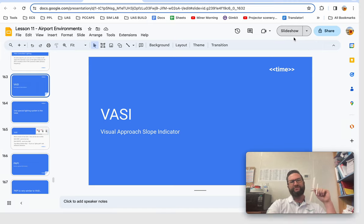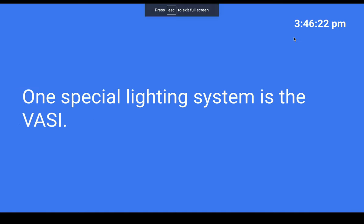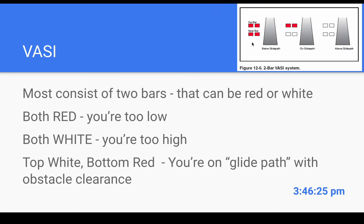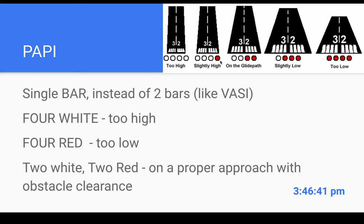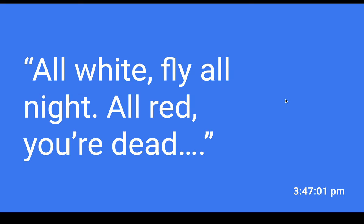One special lighting system is the VASI — Visual Approach Slope Indicator — which consists of two bars. White over red means you're on glide slope. All red means you're too low; all white means you're too high — 'fly all night.' Now you may also have a PAPI, which is similar to a VASI but uses four lights in a row. Four whites means you're too high; three whites and one red is slightly high; two red and two white means you're on glide path; three red means you're low; four red means you're really low — 'all red and you're dead.'